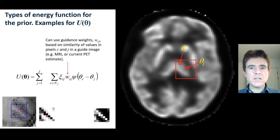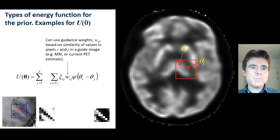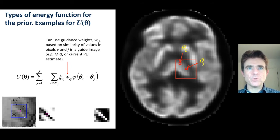This energy function is going to favour PET images that have similar values along that diagonal, because the MR image has similar values along that diagonal.